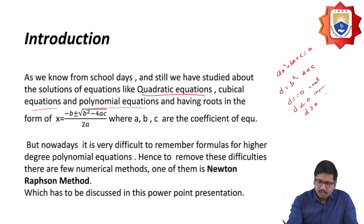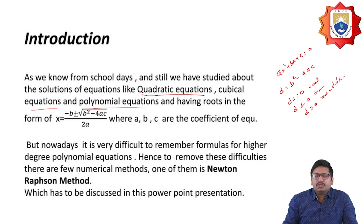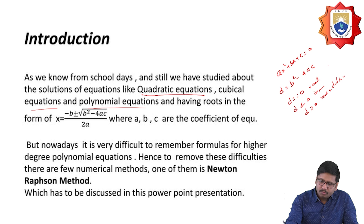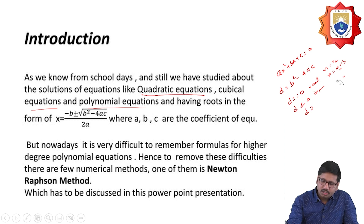Whenever the discriminant value is greater than zero, the roots are real and different. If D equals zero, both roots are equal. If D is less than zero, the roots are imaginary of the form a plus ib and a minus ib. And if D is greater than zero, the roots are real and distinct.